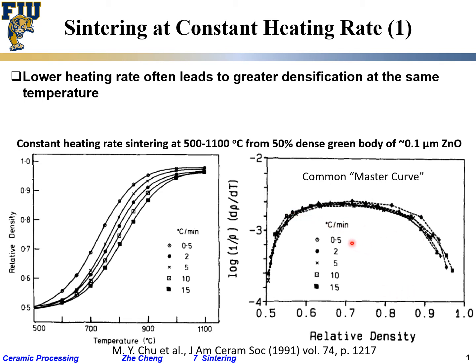Essentially what this means is: as long as your relative density is between roughly 0.55 and 0.85, you would have a relatively high value of this normalized densification rate. Note this is normalized by temperature, not by time.